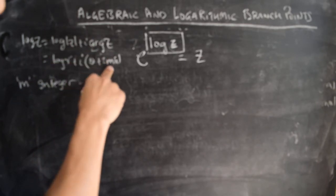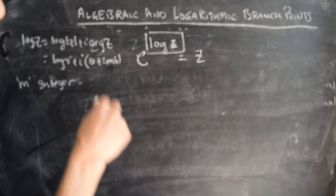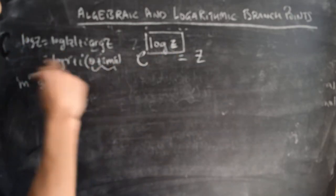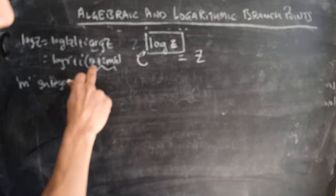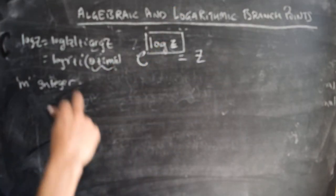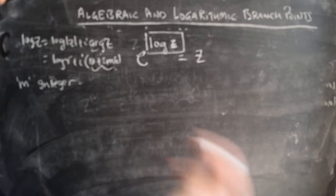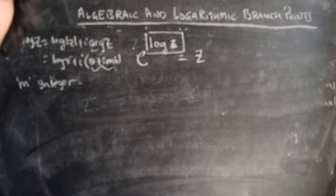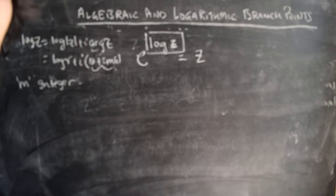From here, we see that as we wind around the origin — where m is actually the winding number — the imaginary part of the log function keeps moving away from the value we started off with. If we started off with theta, then as m increases, we keep moving away from that value. Therefore, this function has a logarithmic branch point at z equals zero. We can extract single-valued branches from this function by drawing a branch cut from z equals zero all the way to infinity, so that we restrict the range that theta takes to a half-open interval of length 2 pi.